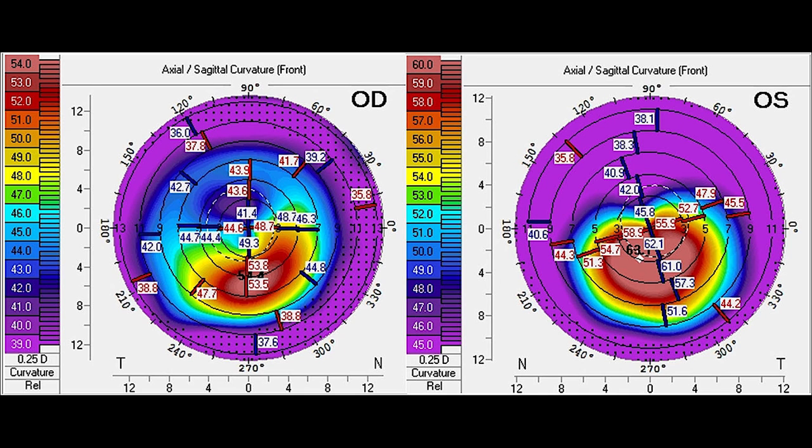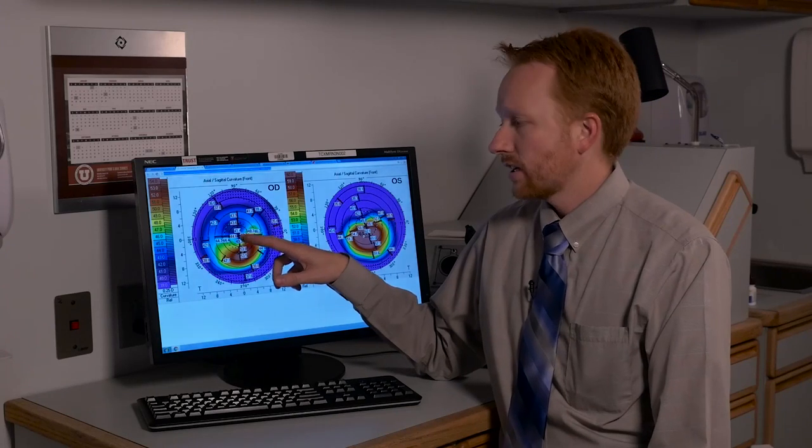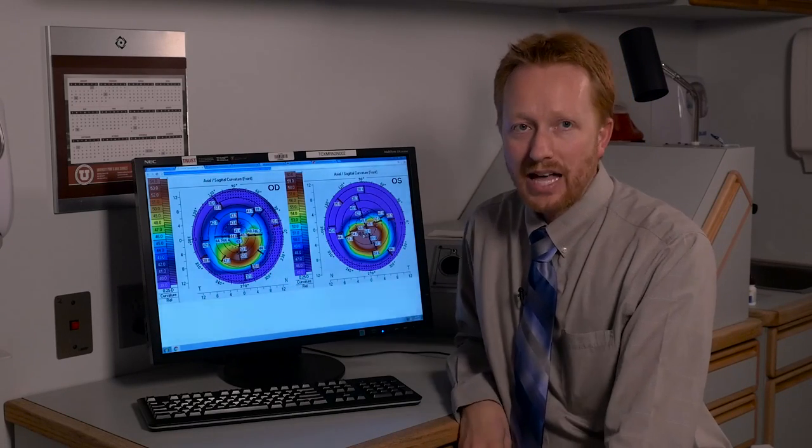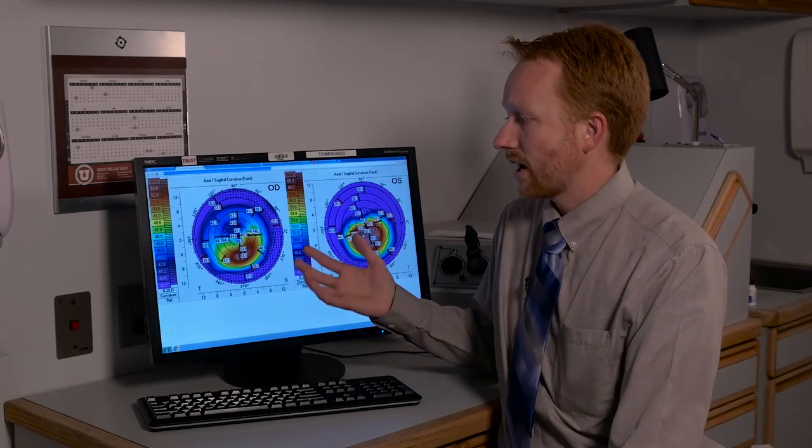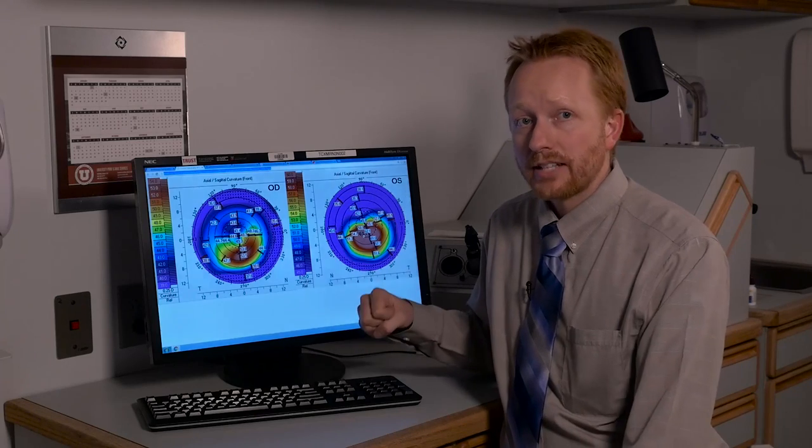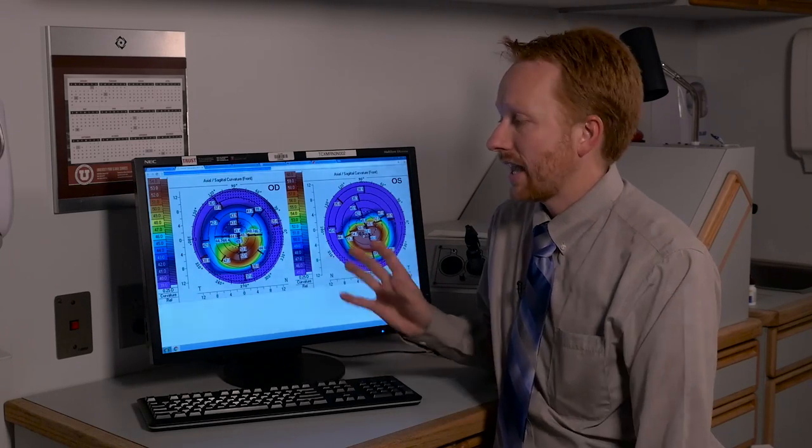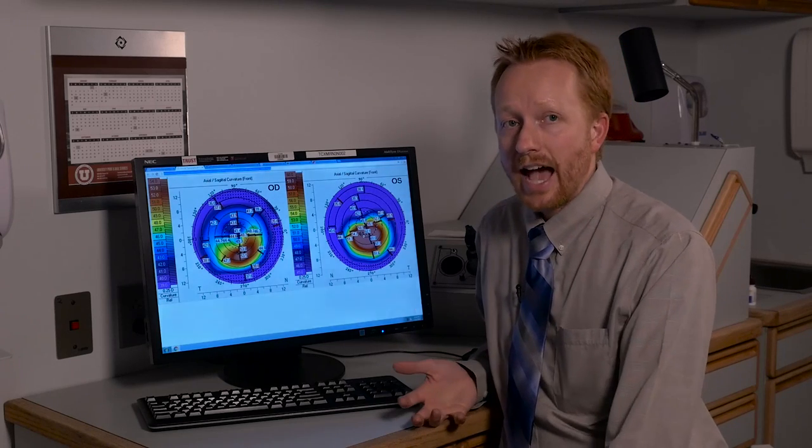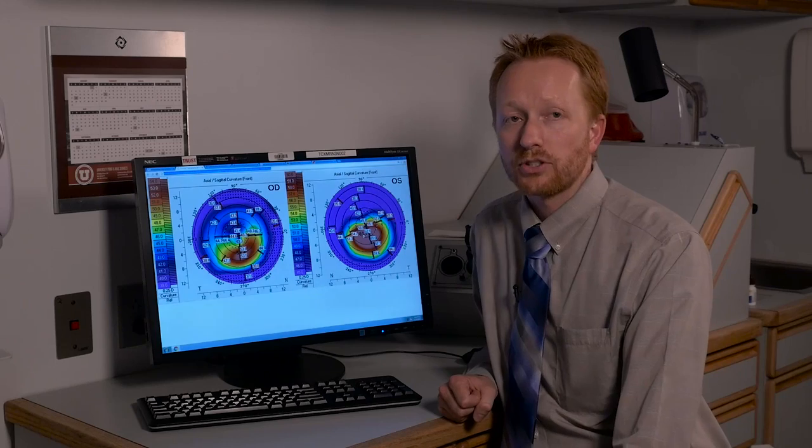This patient has one area of very steep cornea at 54 diopters, and you can see surrounding that it flattens out with a very flat area just superior to the visual axis. This is a very irregular pattern. This is someone who has keratoconus and the challenge will be, whether it's glasses or contacts, to try to minimize ghosting and double images. In a case like this, a gas permeable contact lens would be the ideal way to reduce these symptoms.